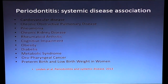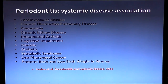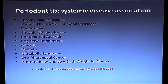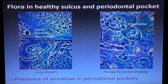We know now that there are systemic diseases associated with periodontitis. You find more cardiovascular disease, chronic pulmonary disease, pneumonia, kidney disease, arthritis, obesity problems, diabetes problems, and preterm birth and low birth weight in women. So this is a very important disease to take care of and cure.